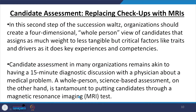Whenever we are talking about candidate assessment — replacing checkups with MRIs — in the second step of the succession process, organizations should create a four-dimensional, whole-person view of candidates. This assigns as much weight to the less tangible but critical factors like traits and drivers as it does to key experiences and competencies. Out of those four — experiences, competencies, traits, and drivers — the less tangible but critical factors must be weighted. Candid assessment in many organizations remains akin to having a 15-minute diagnostic discussion with a physician about a medical problem.